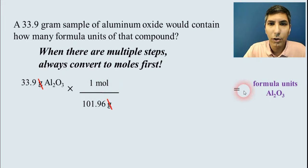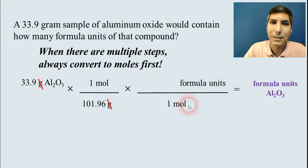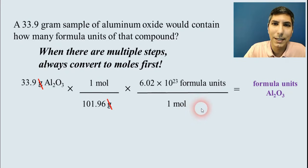So we can cancel the grams. And now we're going from moles to formula units. So in our next conversion factor, it'll be one mole on the bottom. And how many formula units are in a mole? It's 6.02 times 10 to the 23rd.